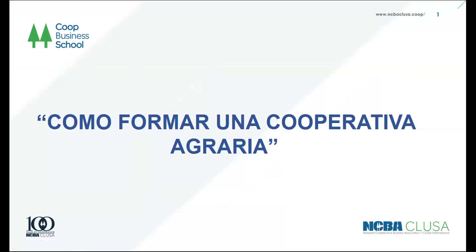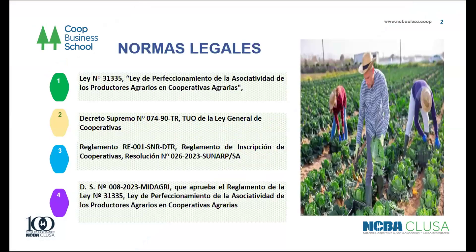El tema que vamos a tratar es cómo formar una cooperativa agraria. Específicamente la agraria, porque el tema de la cooperativa de servicio público u otro tipo de cooperativa es casi similar, solo que hay algunas diferencias con la elección del presidente. En el tema de cooperativas agrarias tenemos que tener presente la norma que la regula: la ley 31.335, que es la ley agraria, conexo con el decreto supremo 074, que es la ley general de cooperativas. También el reglamento de SUNARP, que ha salido el año pasado, que regula el procedimiento registral, lo cual antes no había. Y el decreto supremo 0823, que regula la ley 31.335. Con esas cuatro normas se rigen nuestras cooperativas.